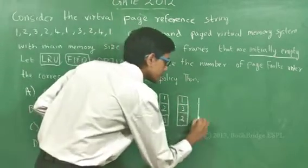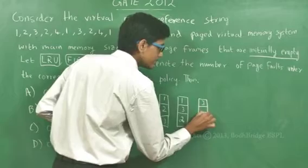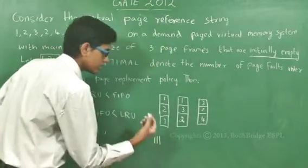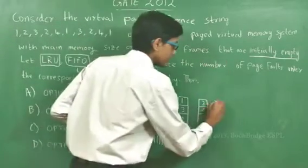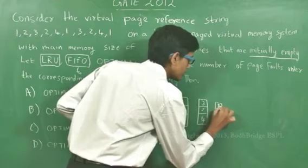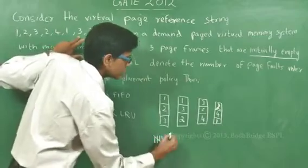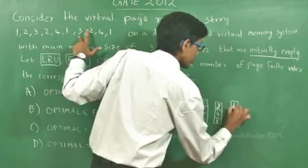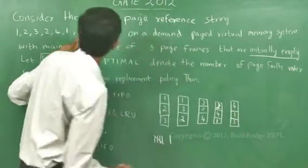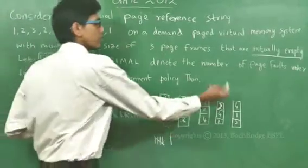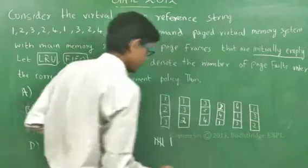Next is 4. Out of the three elements, 1 was least recently used, so 1 is popped out, giving frames 3, 2, 4 — another page fault. Next is 1: 3 is the least recently used, so 3 is popped out, giving frames 2, 4, 1 — another page fault. Now 2 is the least recently used, so for the next reference 3, we get frames 4, 1, 3 — another page fault. Next is 2: 4 is pushed out, giving frames 1, 3, 2 — another page fault.